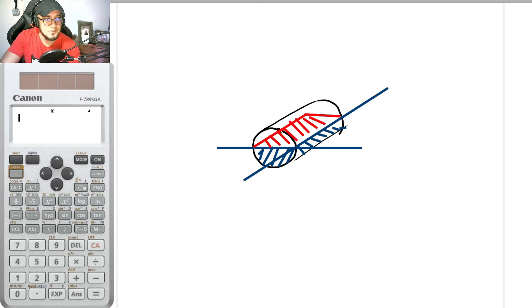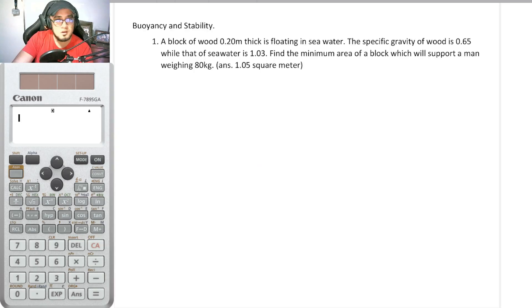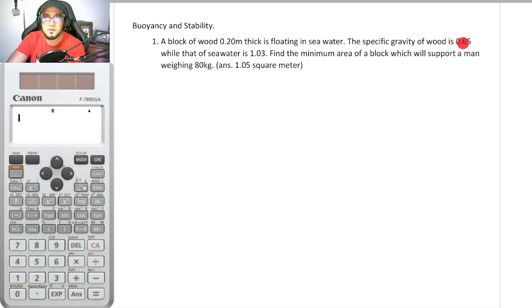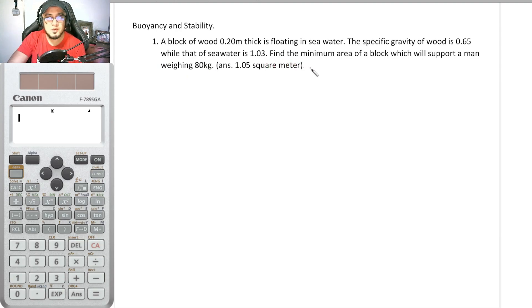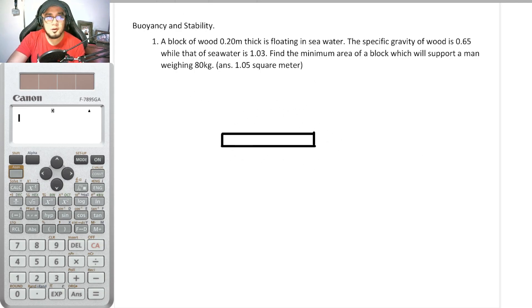Sample Problem 1: A block of wood 0.2 meters thick is floating in seawater. The specific gravity of wood is 0.65 and seawater is 1.03. Find the minimum area of the block which will support a man weighing 80 kilograms. The answer is 1.05 square meters. The block is floating with the water level at the very top surface — the critical minimum condition.